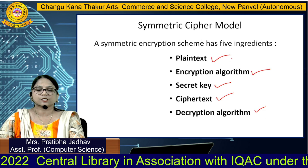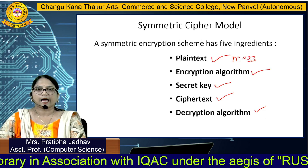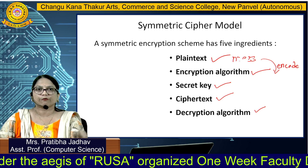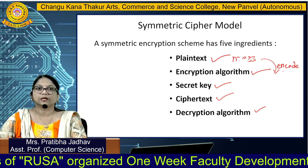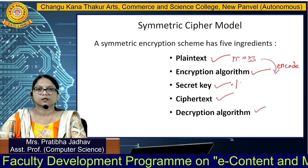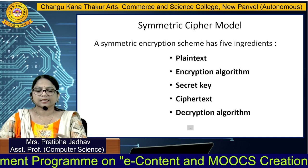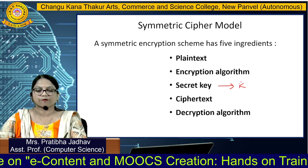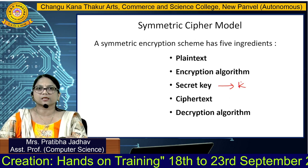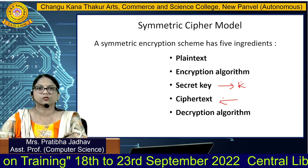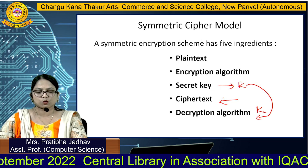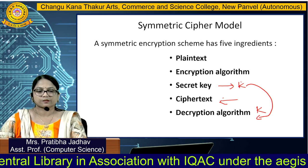Plaintext is the plain message you want to send to the receiver. The message will be encoded using a mathematical algorithm — the encryption algorithm. When using this encryption algorithm, there will be a secret key. This secret key is provided once by the sender, and on the receiver side, the encrypted message is decrypted using the same secret key.